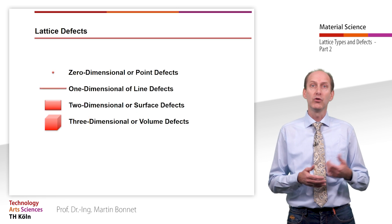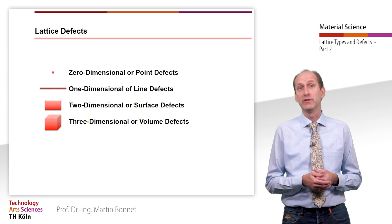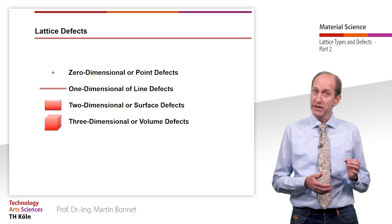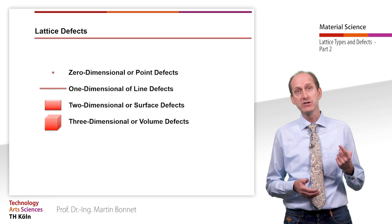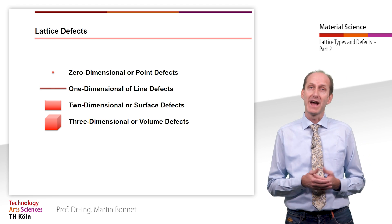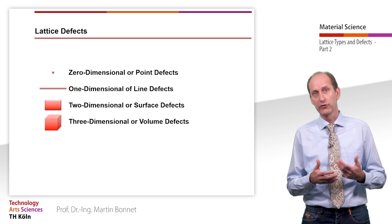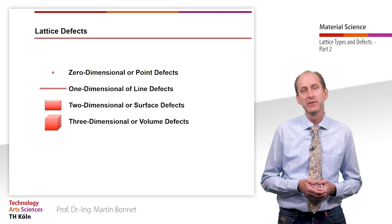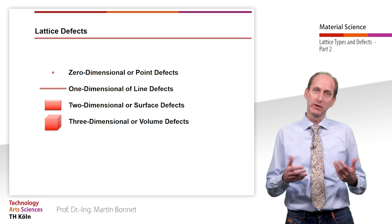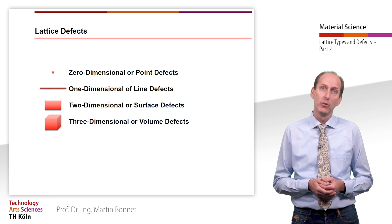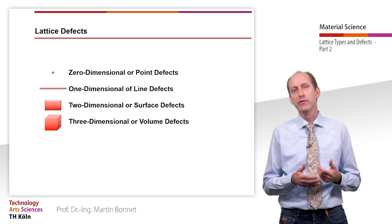According to their form, lattice defects are divided into zero-dimensional or point defects, one-dimensional or line defects, two-dimensional or surface defects, and three-dimensional or volume defects. We will have a closer look at these defects in the following.